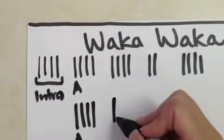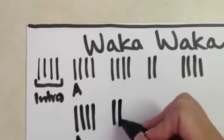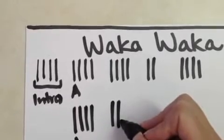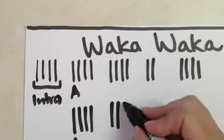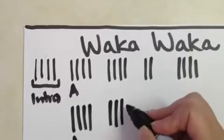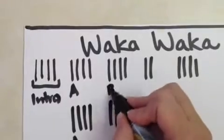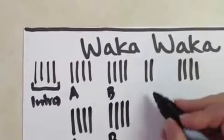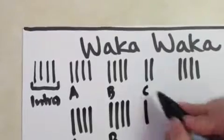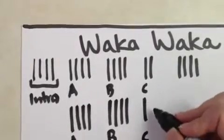So every time a piece of music repeats, I put my little tick marks directly under the piece of music that's identical. So this is my part B — these are both identical pieces of music. Now we come to the chorus, so this is my C, but C is different this time.